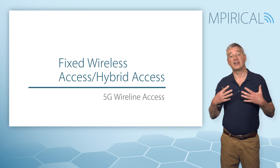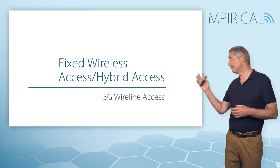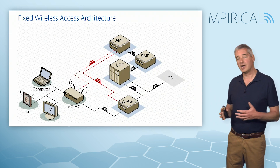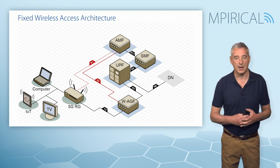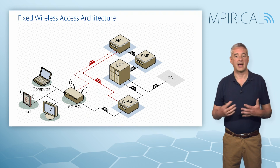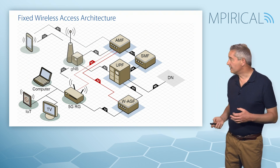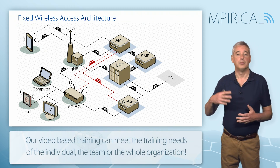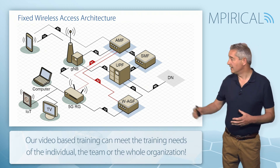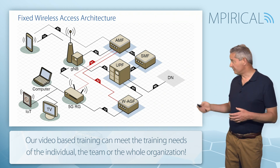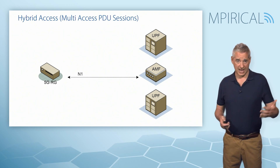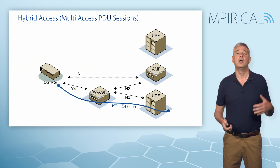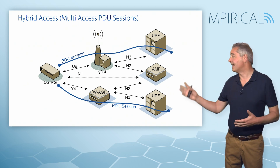The final thing we want to look at is an extension to the architecture: fixed wireless access or hybrid access. The 5G Residential Gateway connects into the 5G core through the Wireline Access Gateway Function, as previously seen. The difference in fixed wireless access is that the same 5G Residential Gateway can also connect into the 5G core through the 5G radio network, out towards the gNodeB. This enables us to support multi-access PDU sessions — potentially via the Wireline Access Gateway Function on one path, but also using the wireless network through the gNodeB.